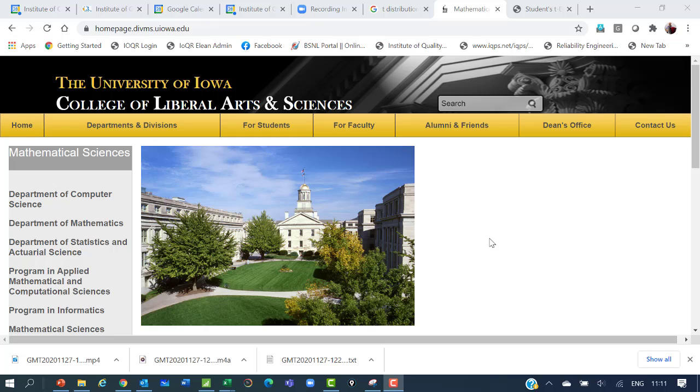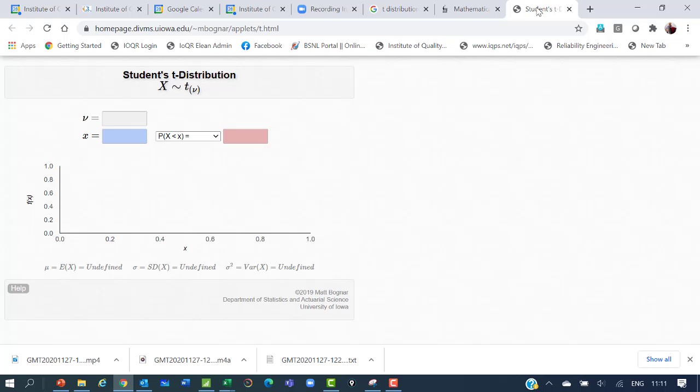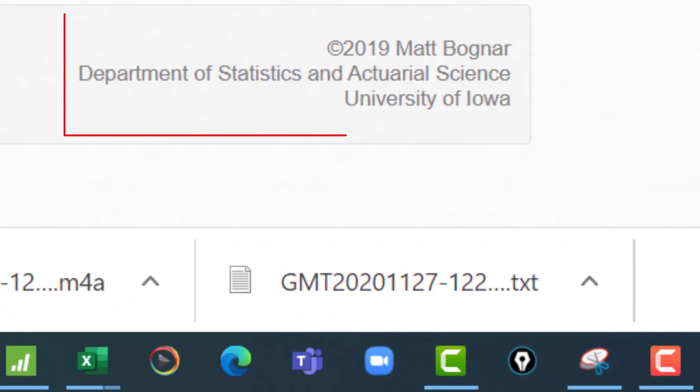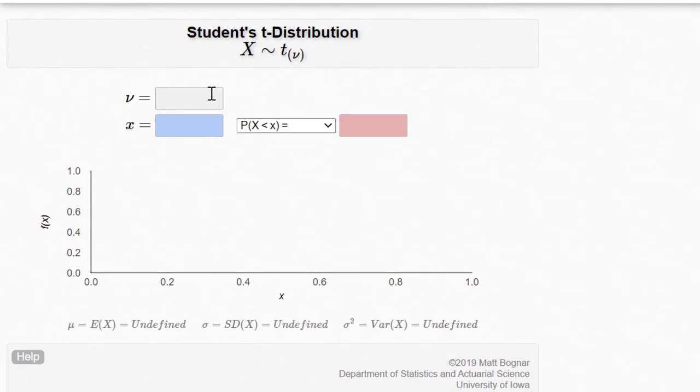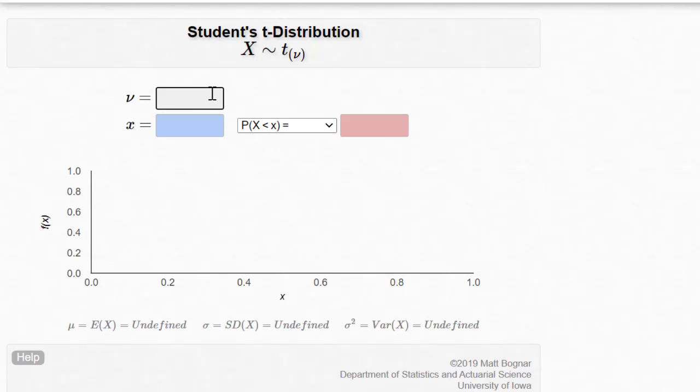There is a nice interactive app developed by the University of Iowa. This is that app of student's T distribution. This app is copyright of Matt Bogner, Department of Statistics and Actuarial Science, University of Iowa.